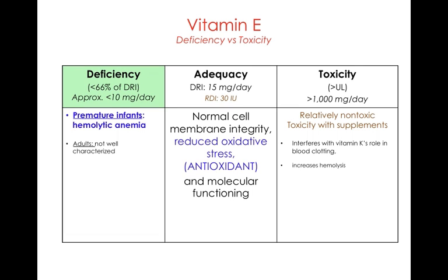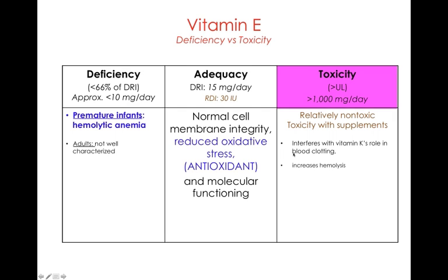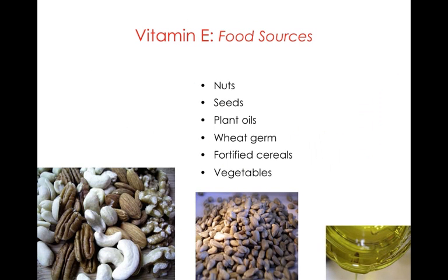Deficiency of vitamin E results in a condition called hemolytic anemia, often found in premature infants. In adults, deficiency is not well characterized and isn't seen very often. Vitamin E's functions include maintaining cell integrity, reducing oxidative stress — it is an antioxidant vitamin — and molecular function. Toxicity is rare; it's usually associated with excessive supplement intake, and may interfere with vitamin K in blood clotting, resulting in increased hemolysis or breakdown of red blood cells.